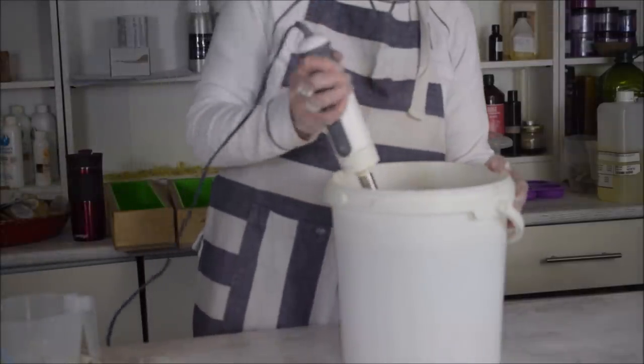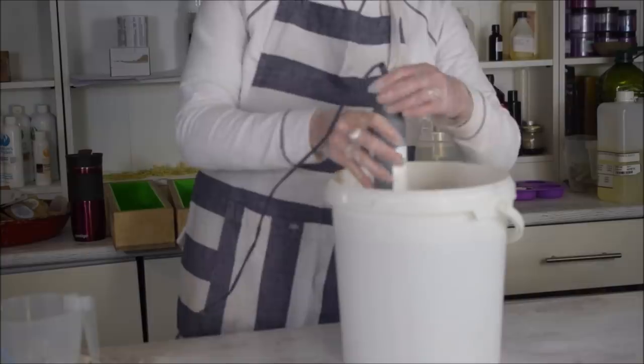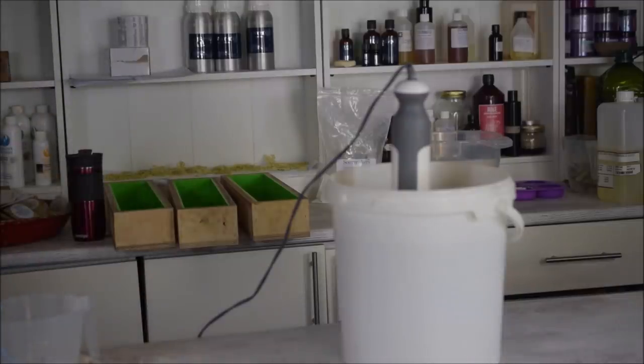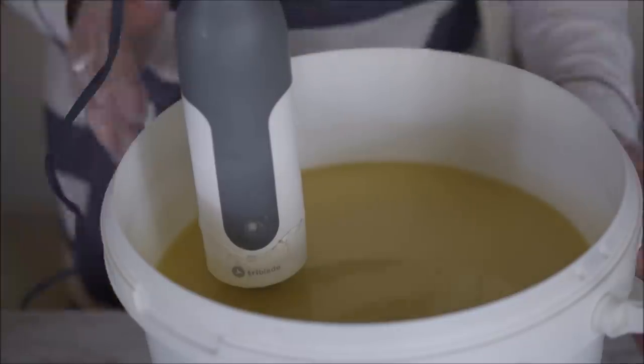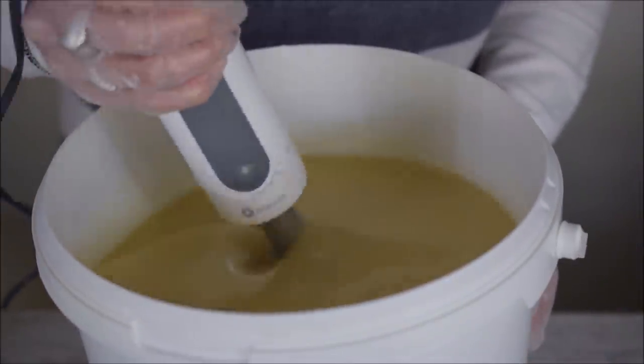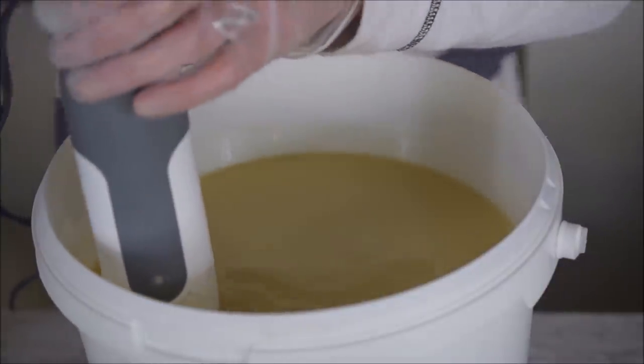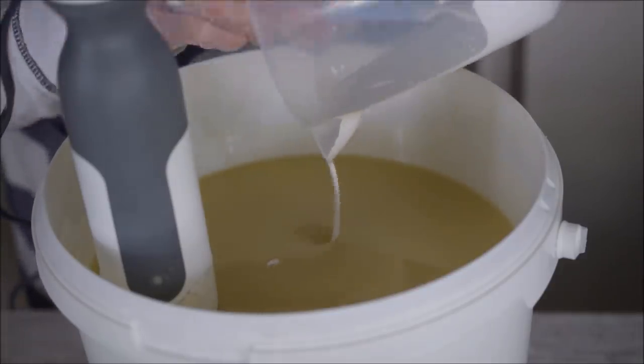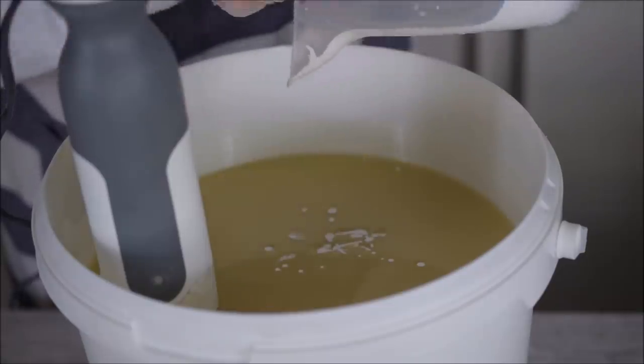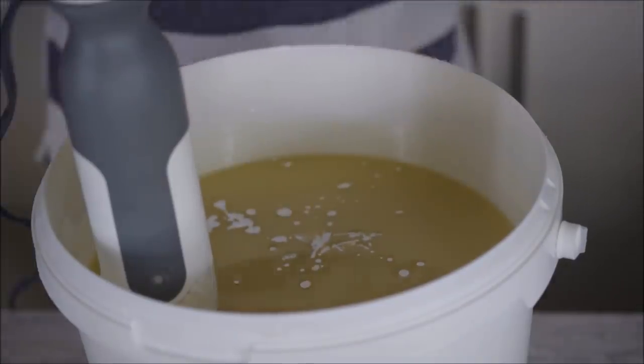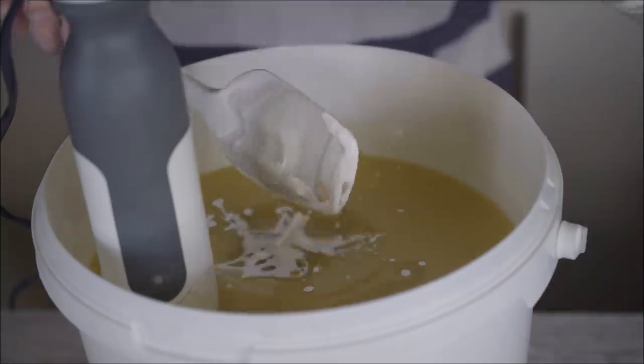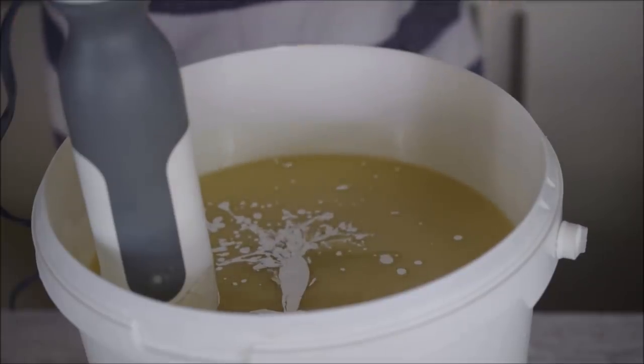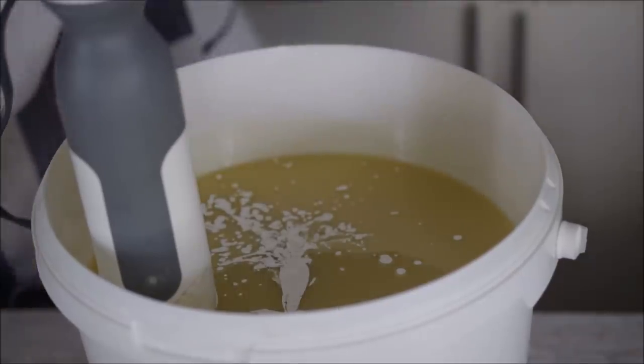So I'm just gonna stick blend this to a light trace. I'm just gonna turn you off for a second because it might take a minute, it's quite a big batch. I've just reached the emulsification stage here so there's no trace yet. I'm just gonna add my white mixture which is just some titanium dioxide in water made into a nice runny paste. Blend that until we reach a light trace.